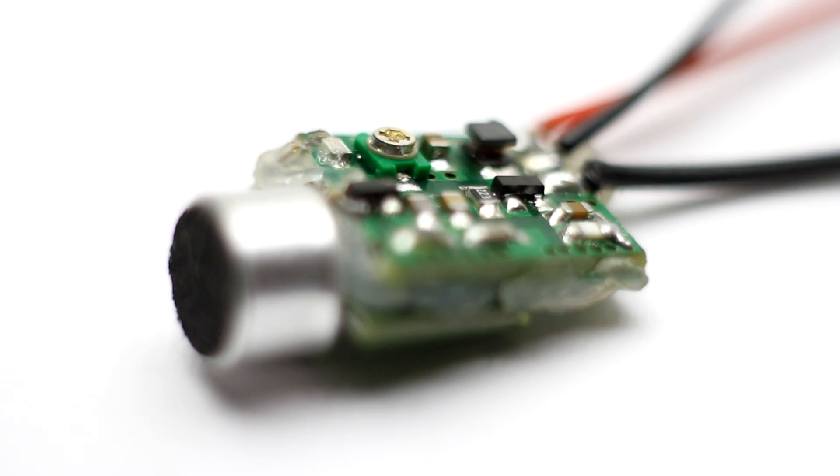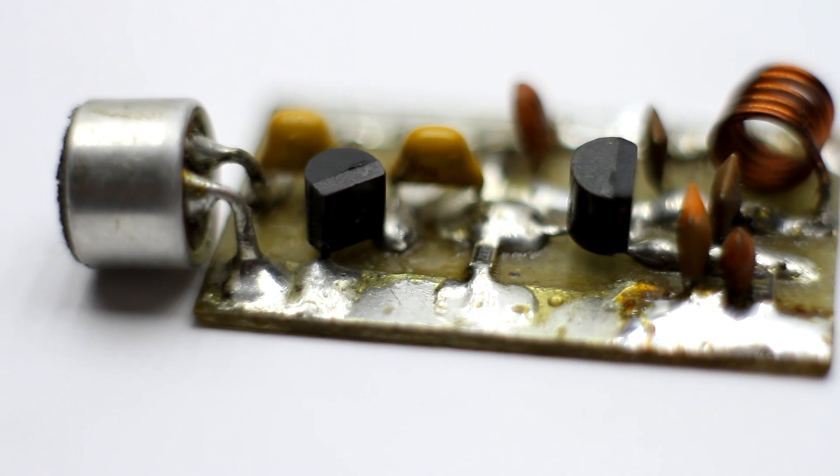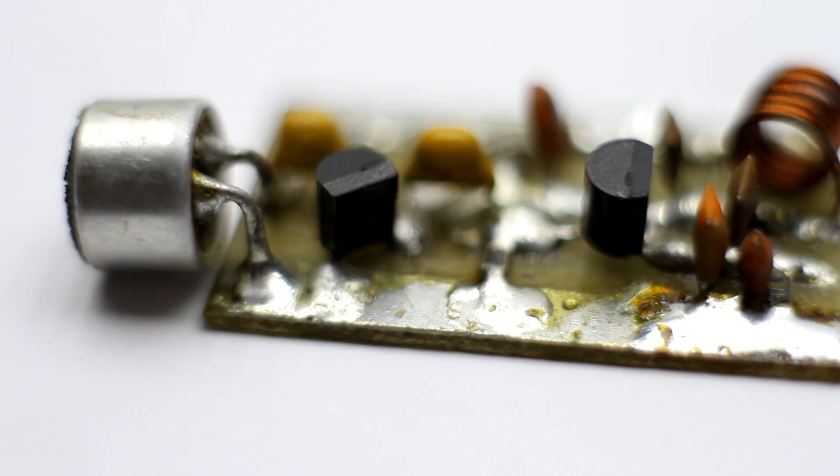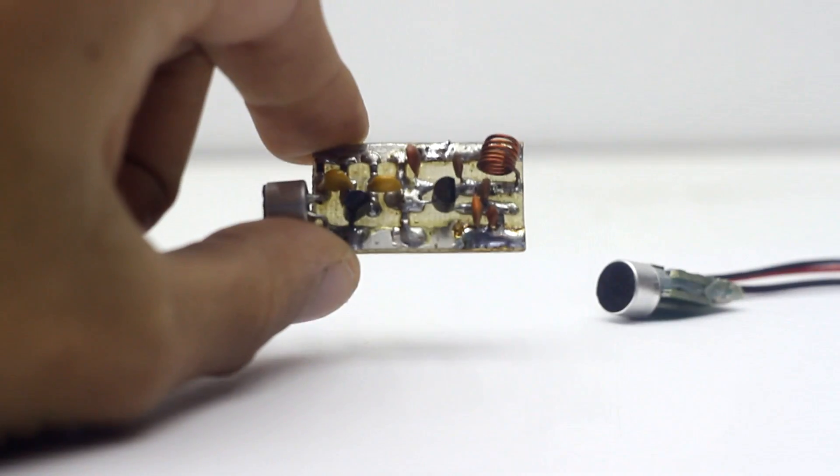Hi friends! Typically, each radio amateur who has just started to get involved in electronics among first designs has made a flasher, a simple amplifier, a receiver and a transmitter.